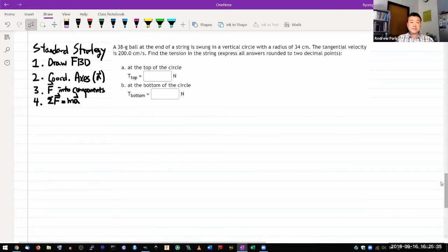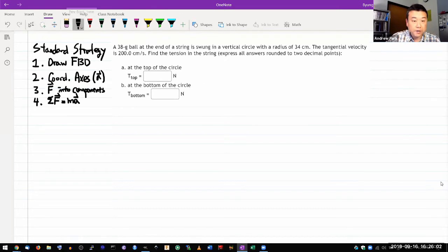It says a ball of some mass is tied to a string, it's being swung in a vertical circle with some radius, and it's giving you tangential velocity in centimeters per second. It says find the tension in the string. As a matter of plugging in numbers, I would probably convert all these into basic SI units, but I'm just going to do it in symbols so I don't have to worry about that.